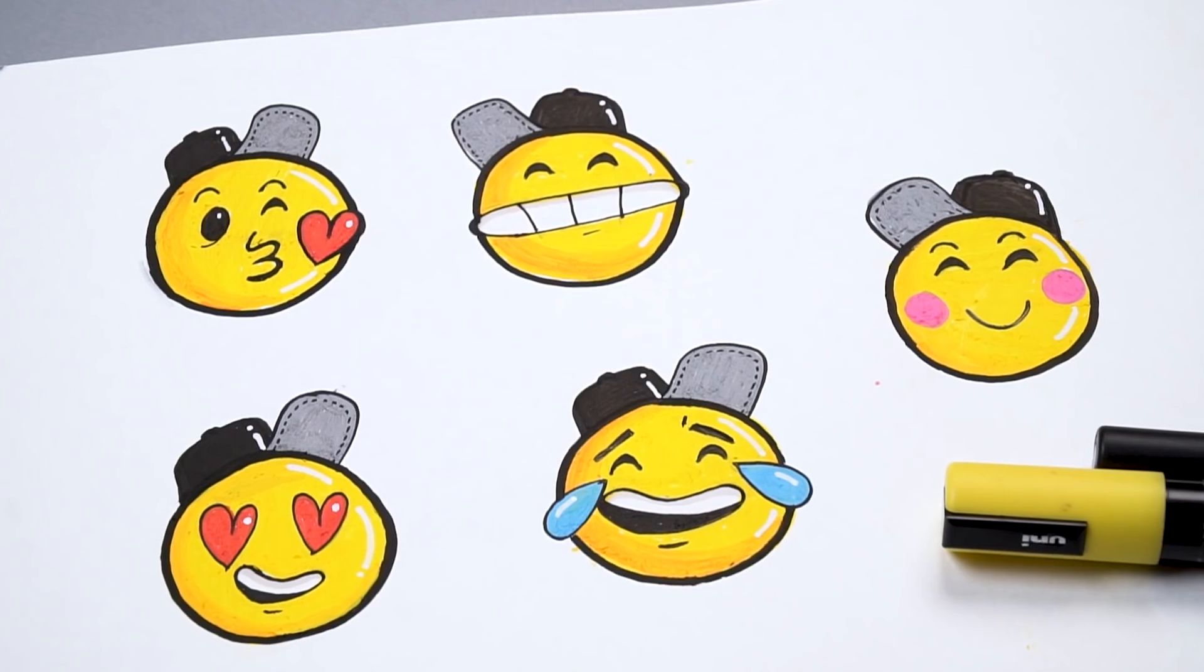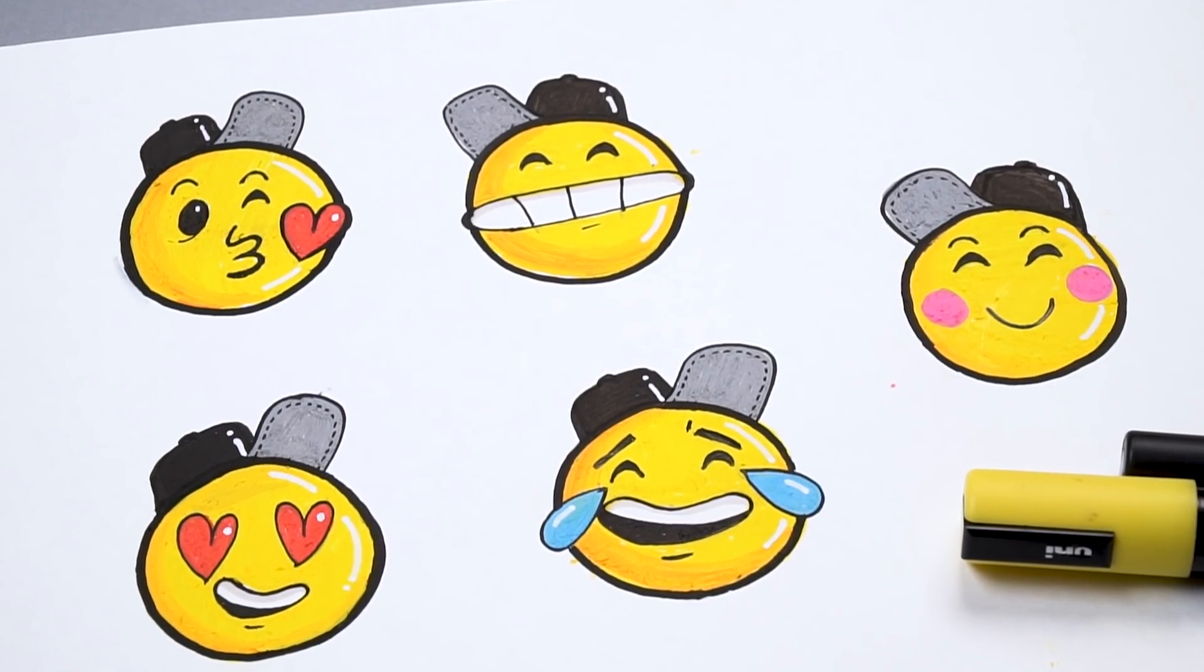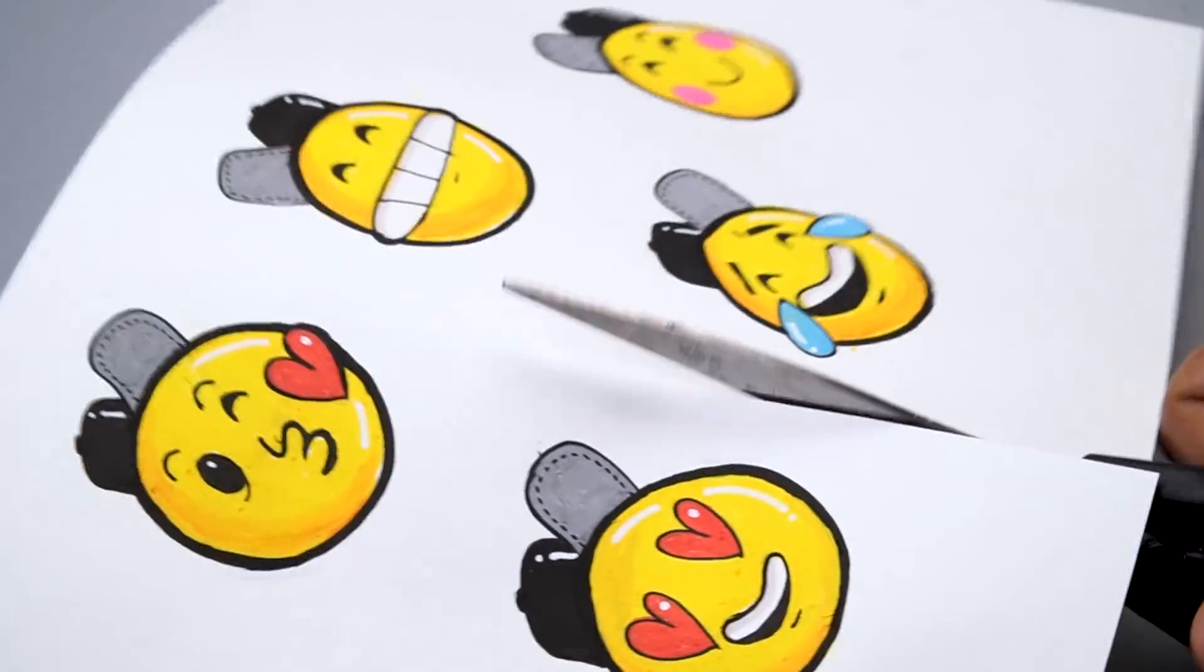Alright, we are done. So you can see all our emojis are ready. Now we will cut them and apply a layer of tape on this.